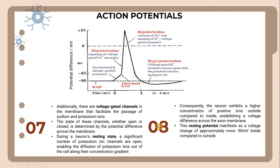Consequently, the neuron exhibits a higher concentration of positive ions outside compared to inside, establishing a voltage difference across the cell membrane. The resting potential manifests as a voltage of approximately negative 90 mV inside compared to the outside.